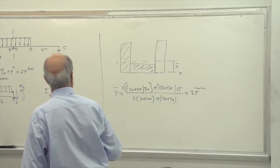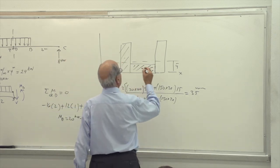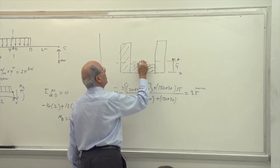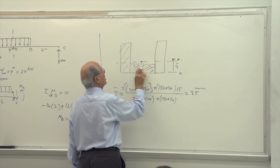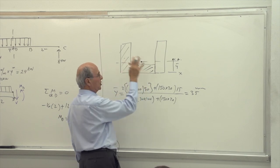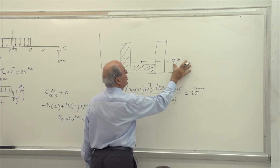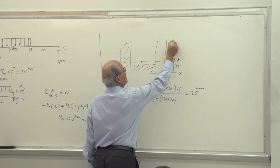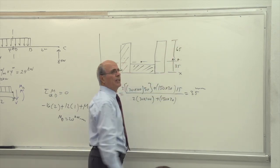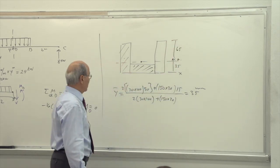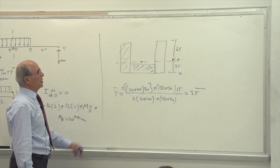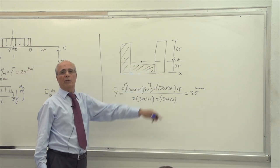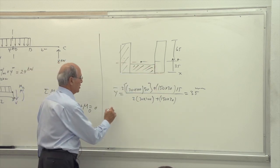You put your neutral axis at this point — the real centroid of the section is at 35 mm. So this distance is 35 and that distance is 65. That is where the stress is going to be equal to zero.